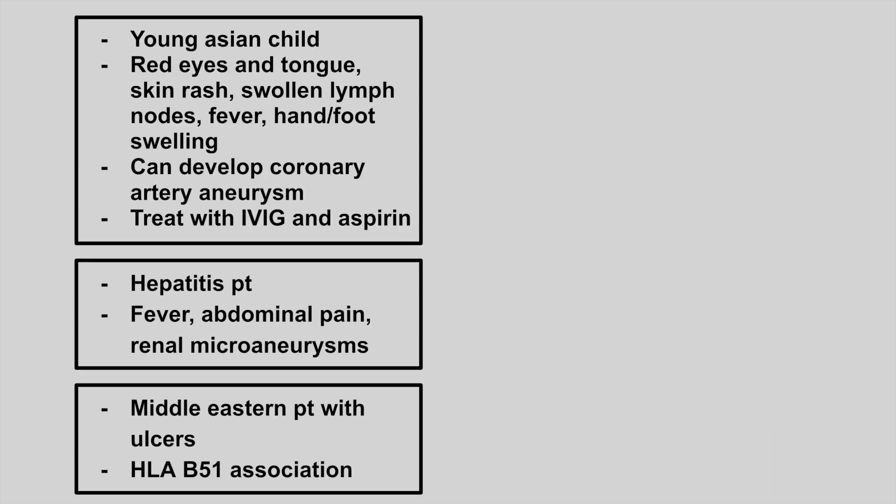Next, we have a young Asian child who has red eyes and tongue, a skin rash, swollen lymph nodes, a fever, and swelling of the hands and feet. They can develop coronary artery aneurysms, and we treat this with IVIG and aspirin. So this is Kawasaki disease. A really important complication is the coronary artery aneurysms. This is one of the only conditions where we treat children with aspirin, because remember, aspirin can cause Reye syndrome.